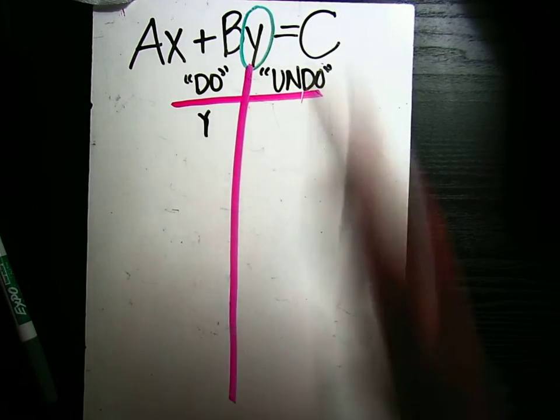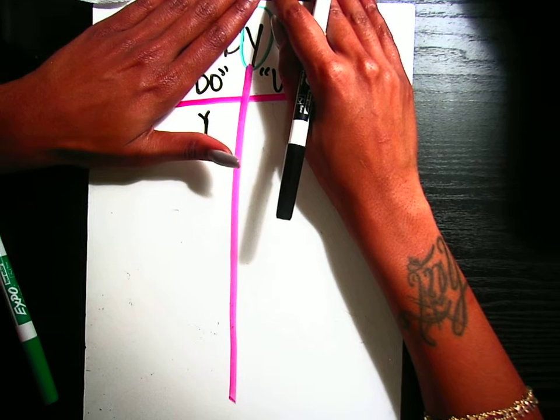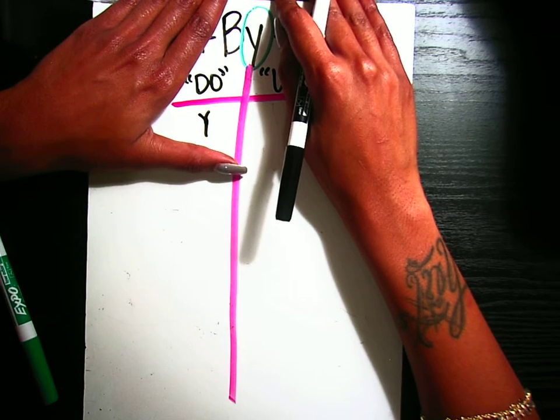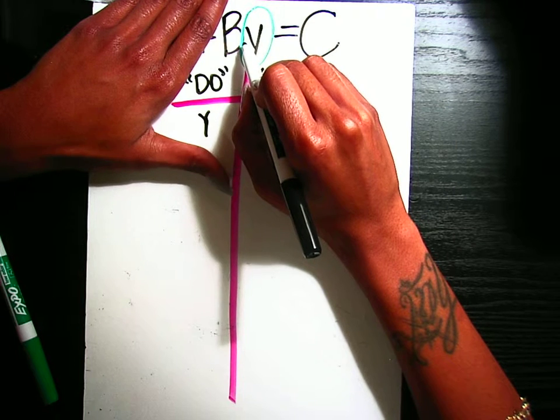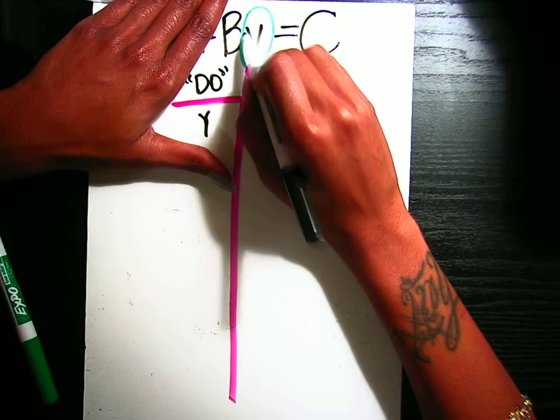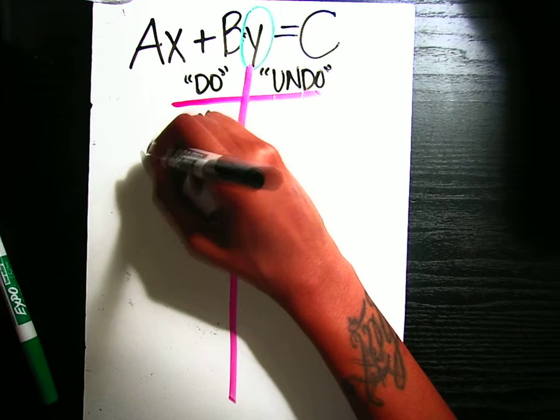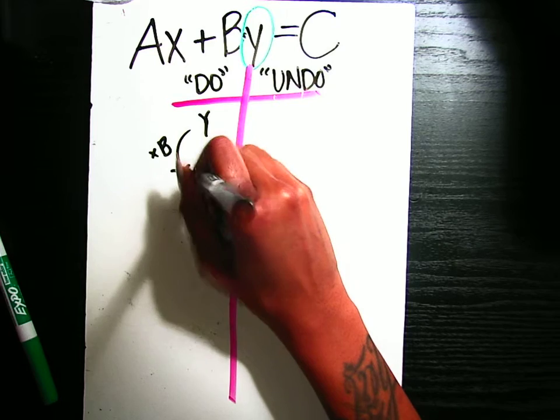What is the first thing being done to Y? So I'm going to cover up my whole equation and be left with Y. The first thing being done to Y is that we're multiplying times B. Mind you, these two written right next to each other like that means we're multiplying the two. So I'm going to times B. That gave me BY.